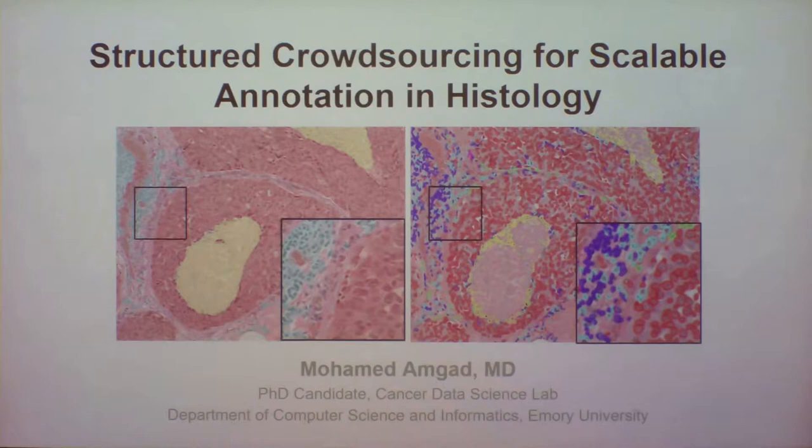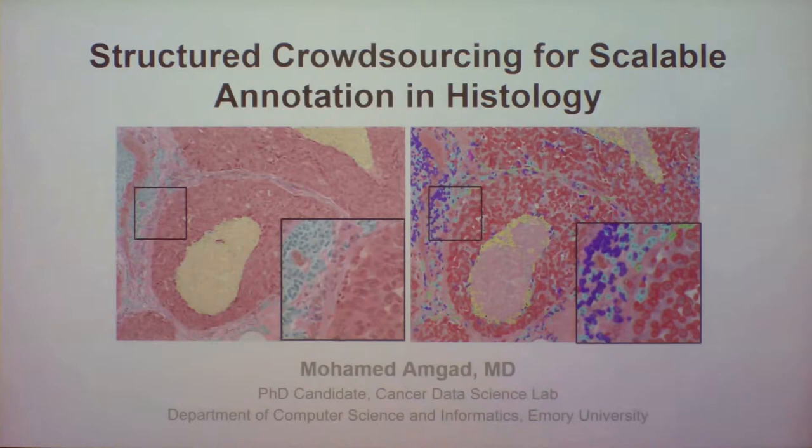The yellow stuff is necrosis — dead tissue because it's not receiving enough blood. The blue stuff is your immune system trying to get to the tumor and kill it. Before we do any analysis, the first thing we want to do is map out these various semantic elements, to know where these things are in the slide — because if you have a picture of a cat and a dog, the first step is to separate them before you decide what to do.